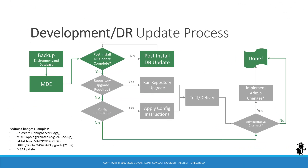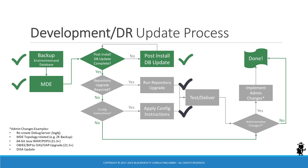The complete update process, with all required and optional steps shown in grey and green respectively, is depicted on the diagram. For development environments, the fast-track to a successful update is as follows: take a backup, run the MDE, run the post-installed database update. If you have no repository upgrades, configuration instructions, or administrative changes to implement, you're done. If you need to execute the non-mandatory repository upgrade or apply configuration instructions, you must do that in the development environment and test and deliver those changes. If you have any administrative changes on your to-do list, implement them as well before declaring success.